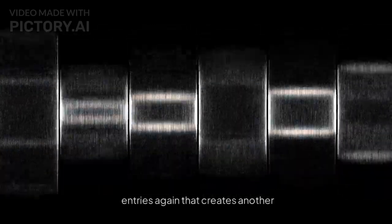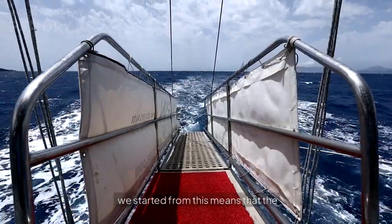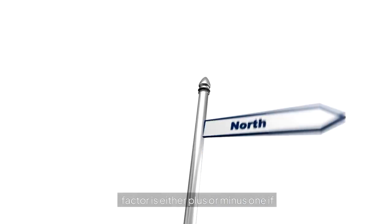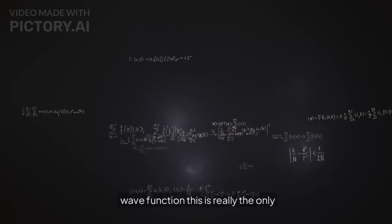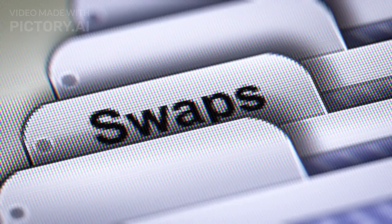If we now swap these entries again, that creates another factor and gives back the wave function we started from. This means that the factor is either plus or minus one. If you didn't understand the thing with the wave function, this is really the only thing that matters in the end. There are only two options: plus or minus one.